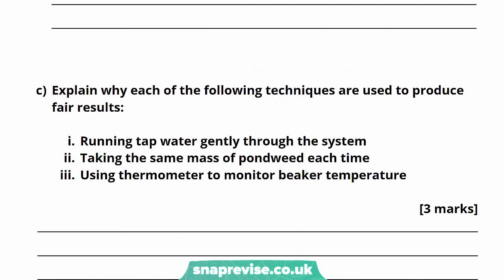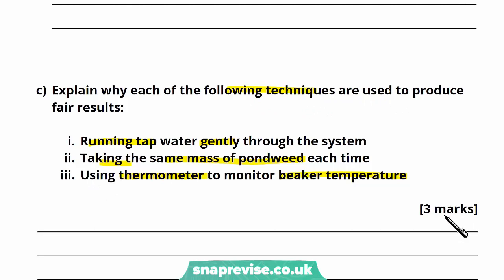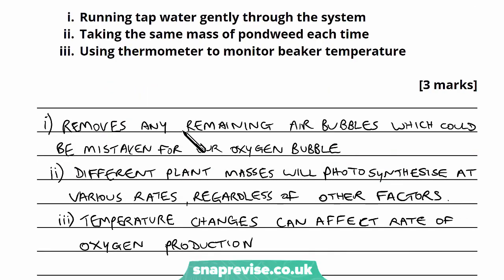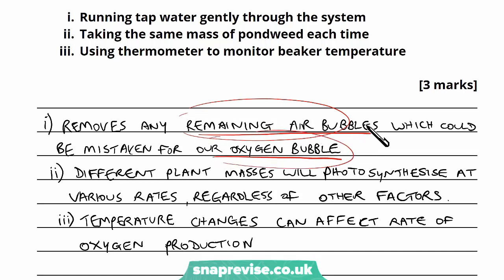Part C says: explain why each of the following techniques are used to produce fair results. This is more of an implementation type of question. It's three marks, so you only need a sentence or two per point — be specific and concise. For part one, running the tap water gently through: it removes any remaining air bubbles which could be mistaken for the oxygen bubble. So it gets rid of air bubbles because we don't want them confused with the bubble of oxygen we're actually looking for.